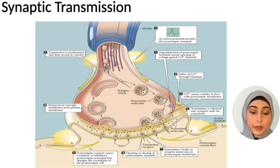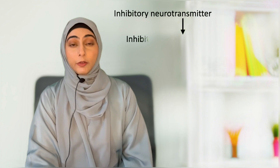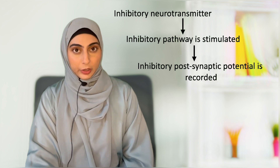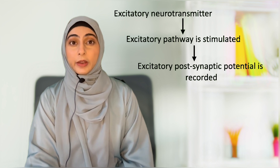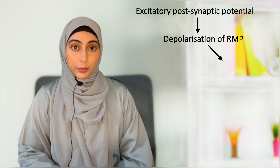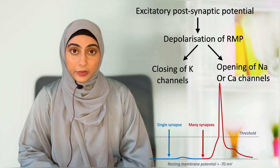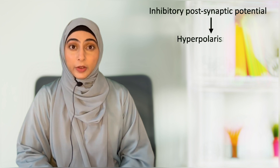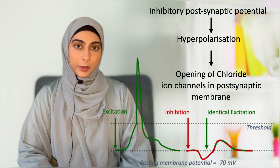Depending on which neurotransmitter is released, there can be an excitatory or inhibitory postsynaptic transmission. If an inhibitory pathway is stimulated, an inhibitory postsynaptic potential is recorded. If an excitatory pathway is stimulated, an excitatory postsynaptic potential is recorded. Excitatory postsynaptic potentials most of the time cause depolarization — either by opening sodium or calcium channels or by closing potassium channels, both resulting in excitation and transmission of action potential. Inhibitory postsynaptic potentials typically cause hyperpolarization, most commonly by opening of chloride ion channels in the postsynaptic membrane.